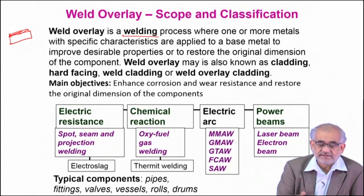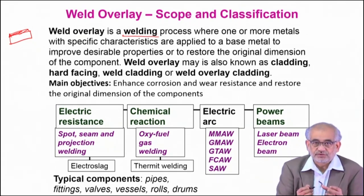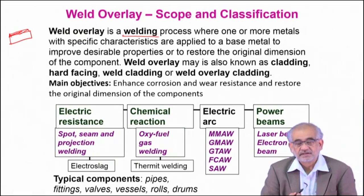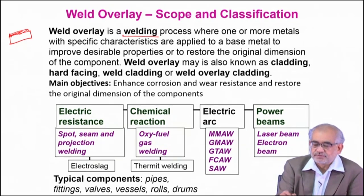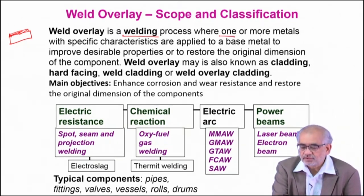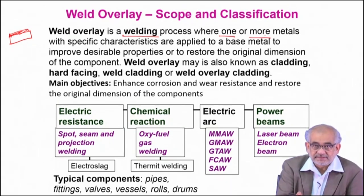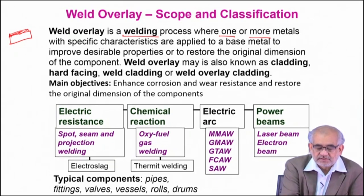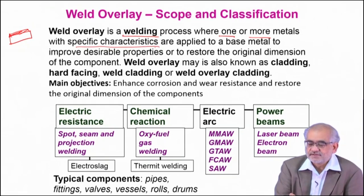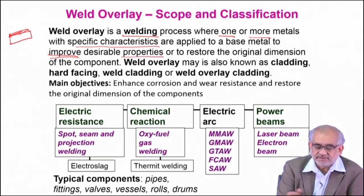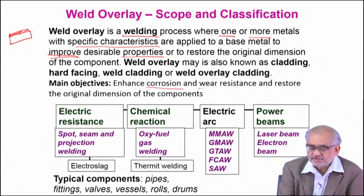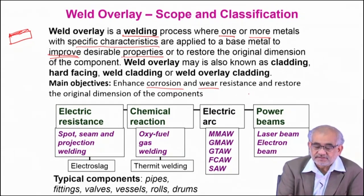In welding, you fuse two different solids you want to join at the interface, either by butt or lap mechanism. But in weld overlay, welding essentially creates an over-layer onto the surface of the existing component. Here we can use one or multiple metals, take them to the fused state, and then deposit. We actually inherit specific characteristics that we add on to the base metal, with the intention to improve desirable properties — typically surface-dependent properties like resistance to corrosion, wear, and hardness increase.